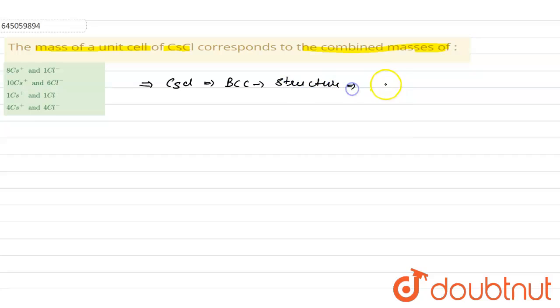In this structure, the cesium atom is present at the body center. Cs+ is present at the body center while Cl- ions are present at the corners. Now if you